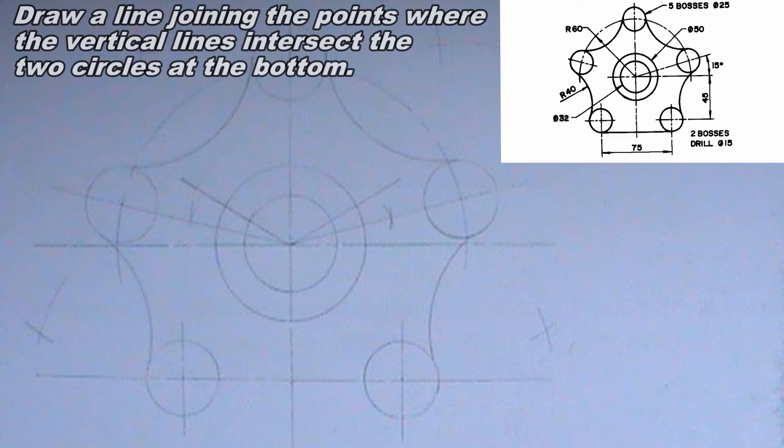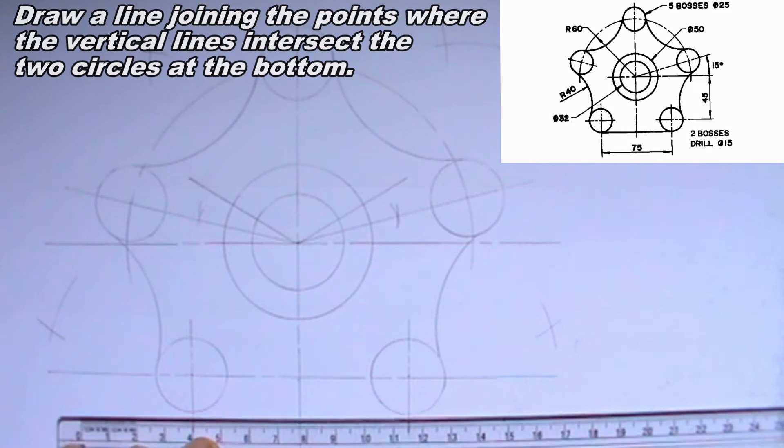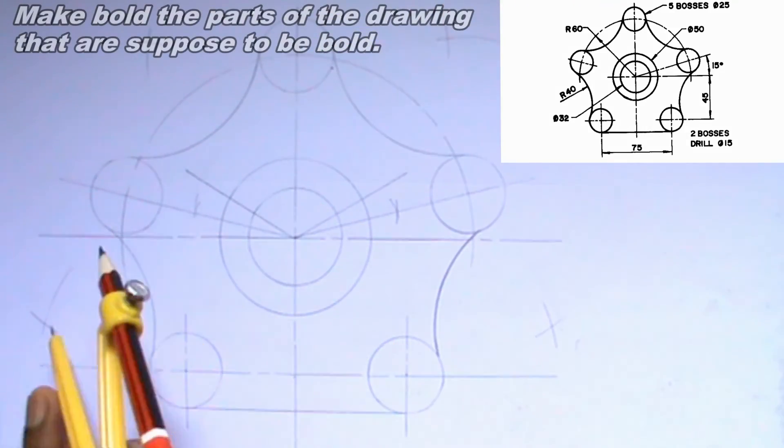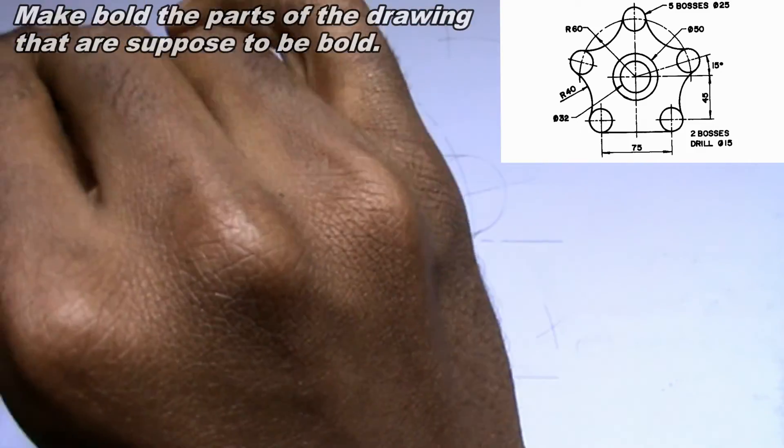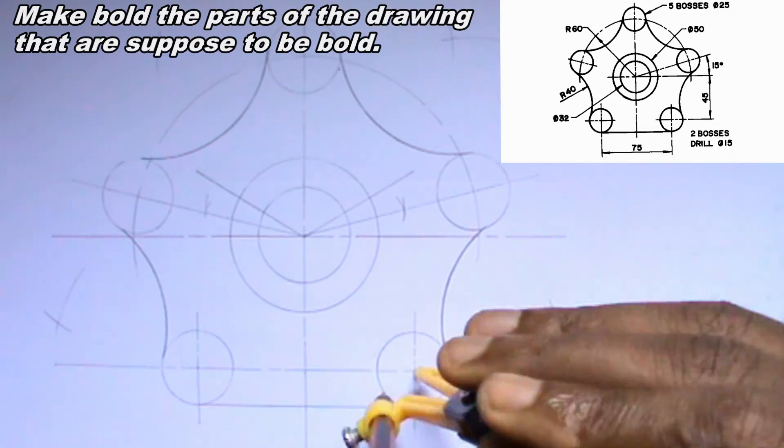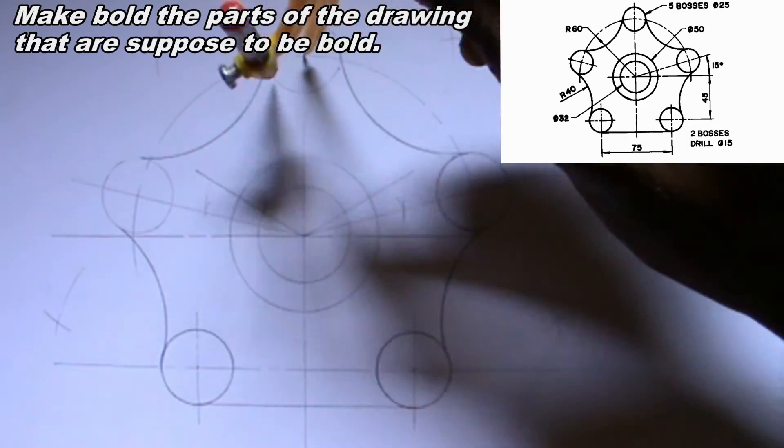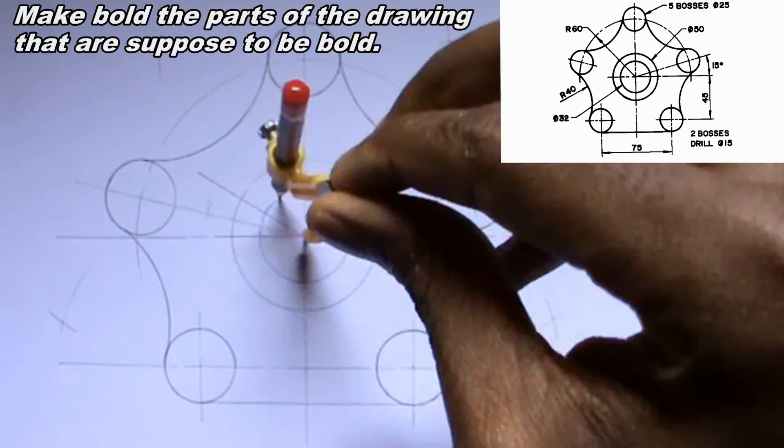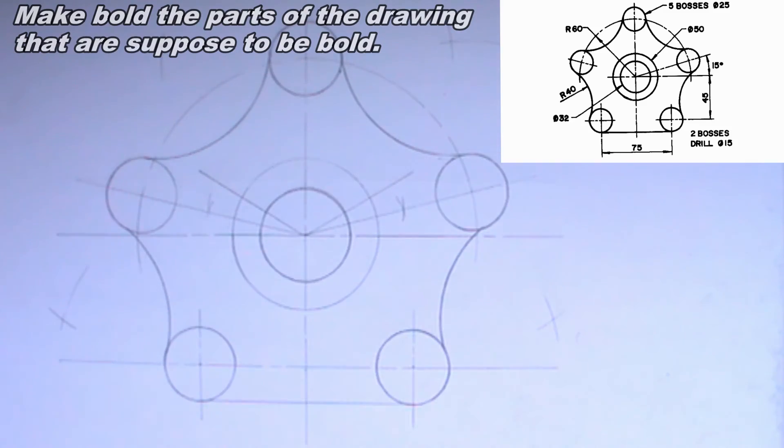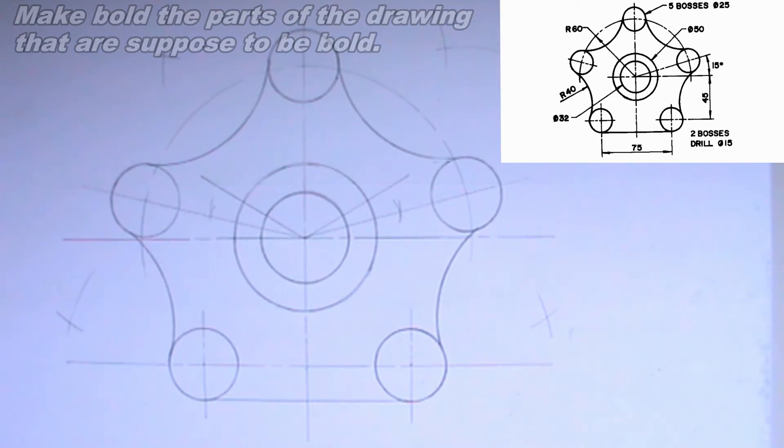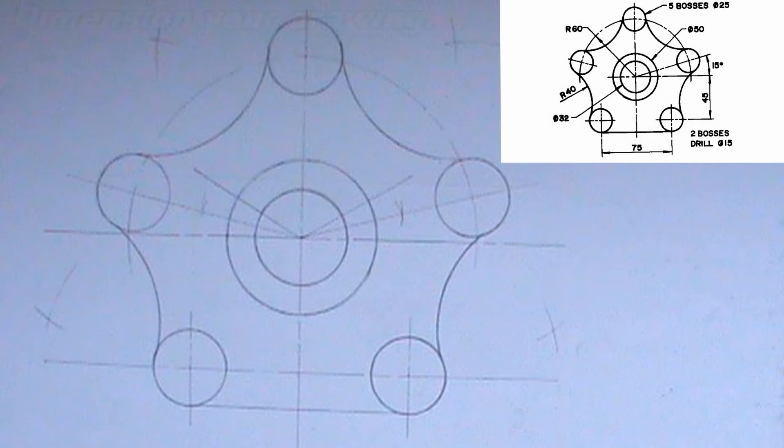Draw a line joining the points where the vertical line intersects the two circles at the bottom. Now I will make bold the parts of the drawing that are supposed to be bold. I am done solving the tangential problem but it is necessary for me to dimension it.